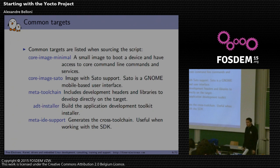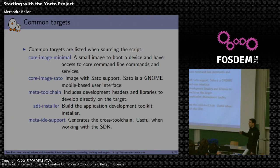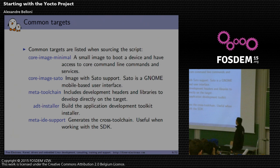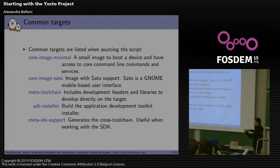When you execute the script, it also prints the common targets you have. For example, core-image-minimal will give you a really small image to boot a device with just a command line. Then you have core-image-sato, which adds Sato UI support based on MatchBox. You also have meta-toolchain, where you can generate an SDK. There are different targets available.